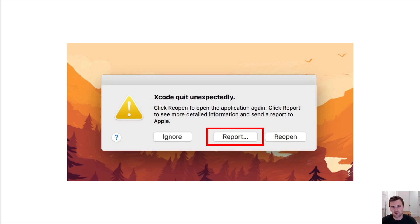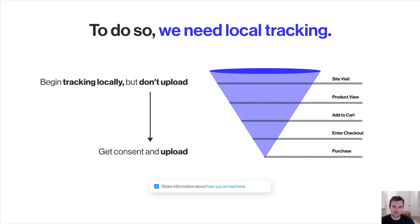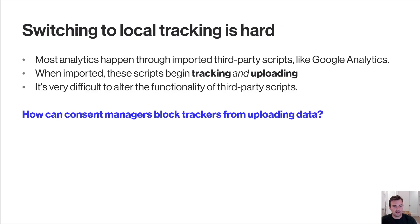If an app quits on you unexpectedly, it will ask you to report that data to a developer. To do something similar, we also need to perform local tracking — meaning that when the user arrives on the website, trackers are allowed to begin collecting data but not uploading it. All of it is stored locally on the user's device, and only if the user provides consent can it be uploaded.